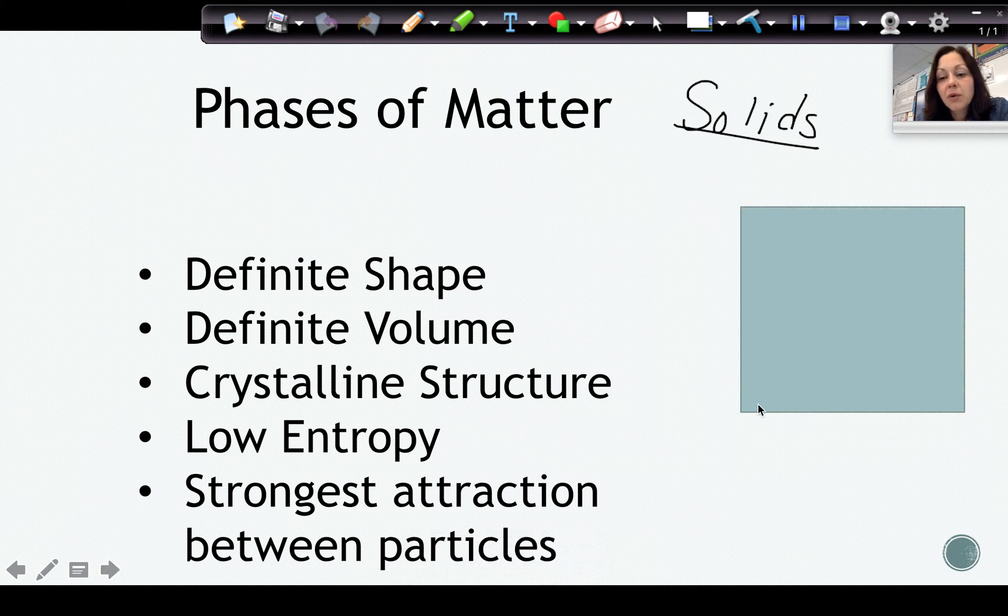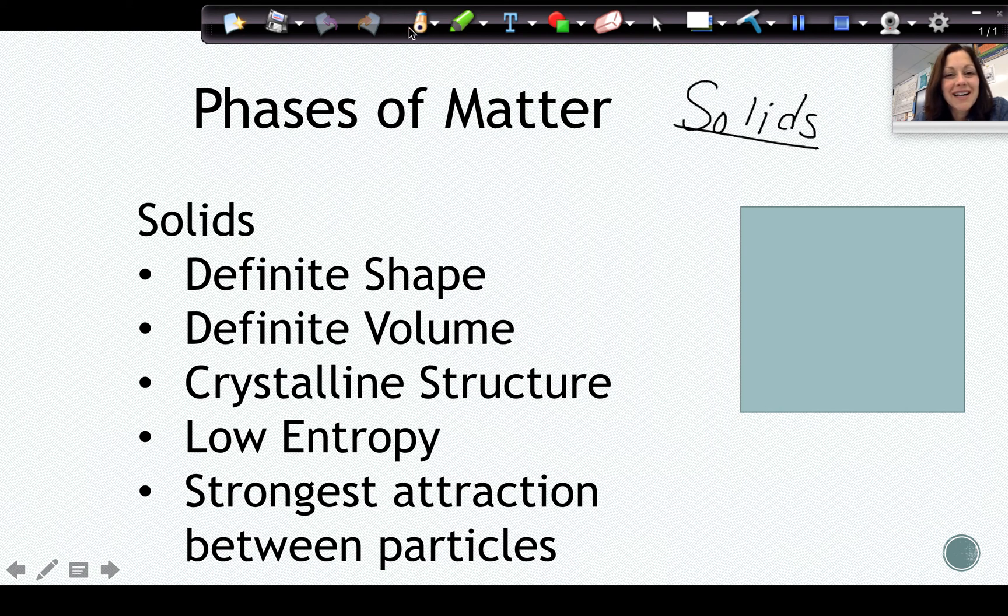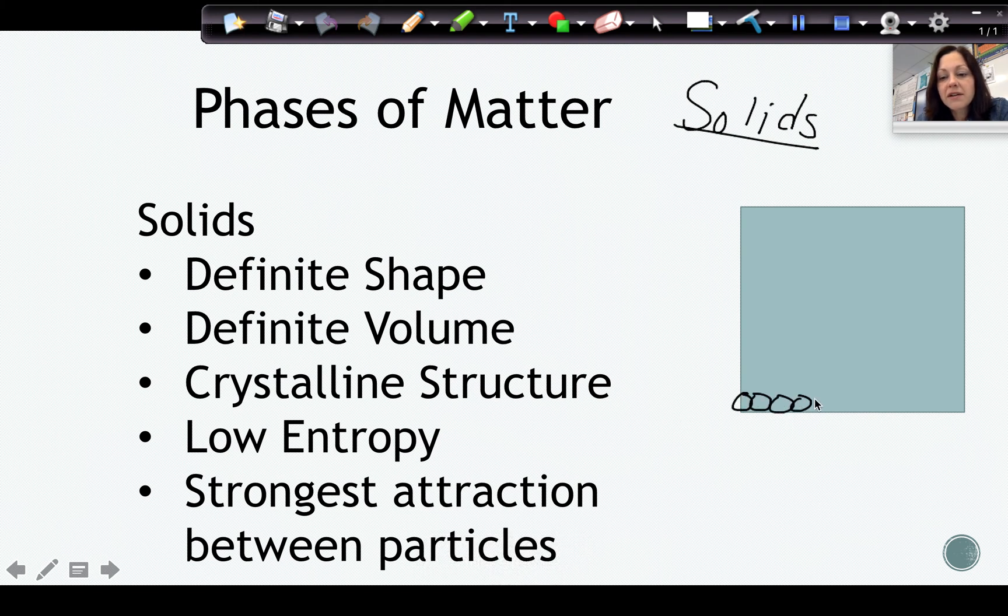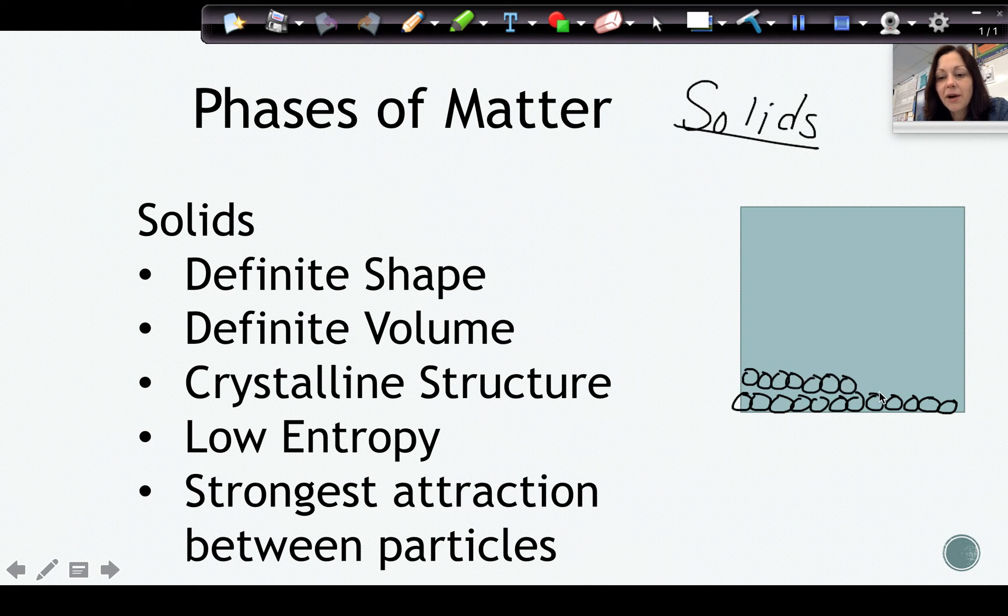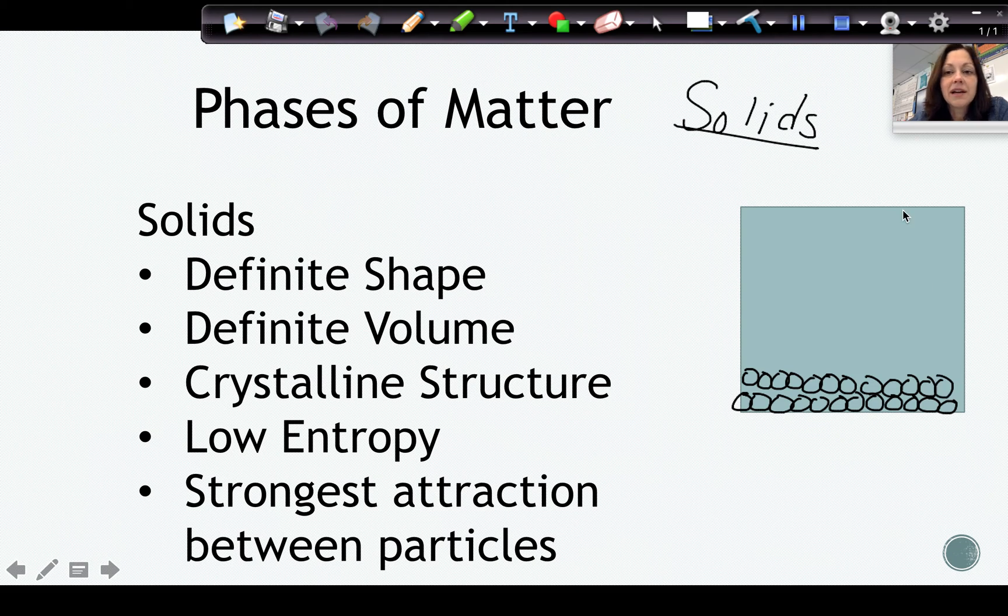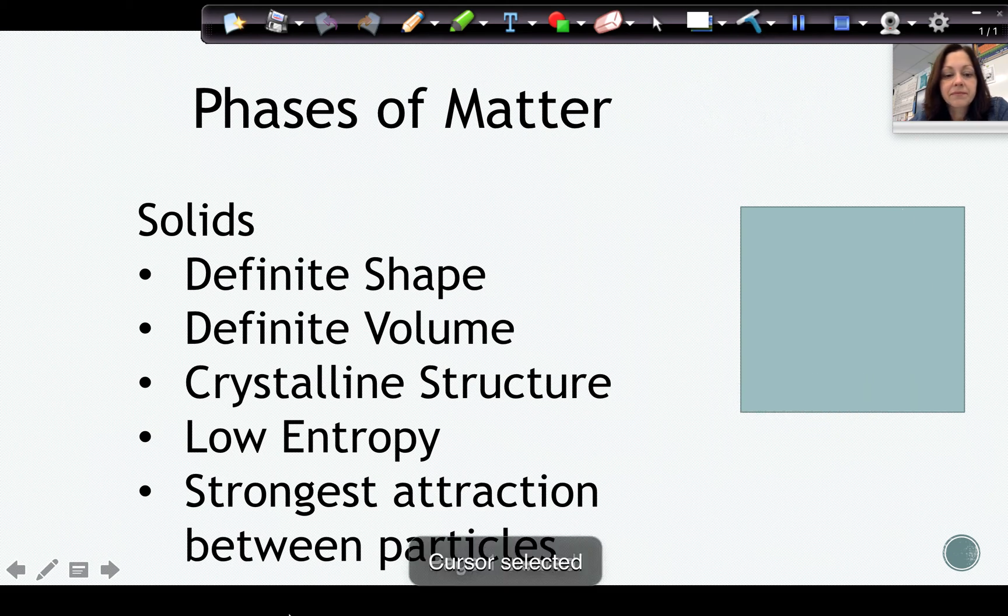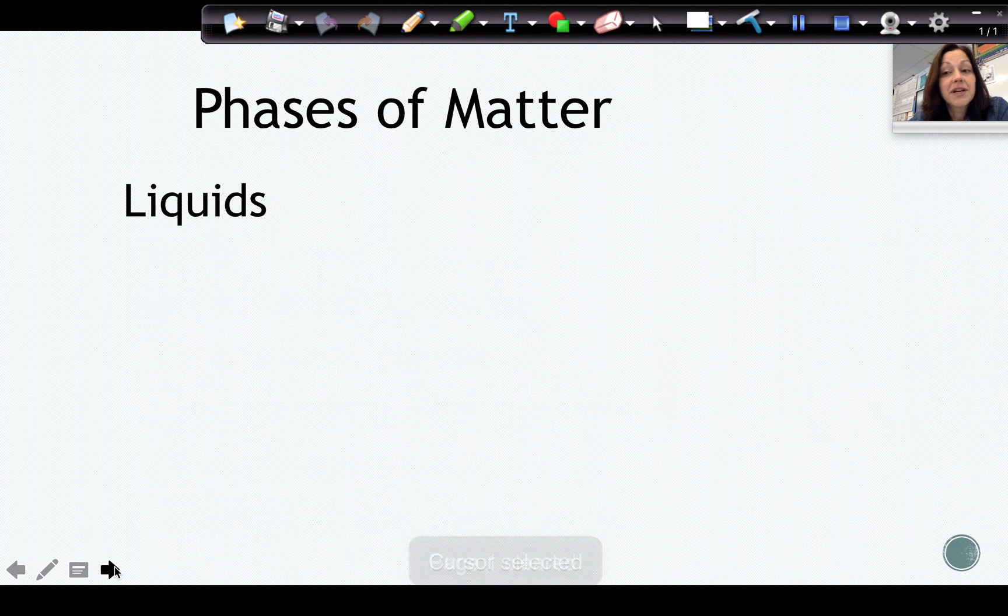When we draw a solid, we're going to draw the particles extremely close together and in a definite pattern, so you're going to see a repeating pattern. We call this pattern a crystalline structure, and that's how our solids are going to be represented.